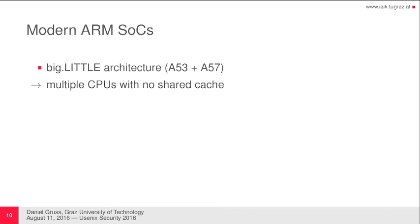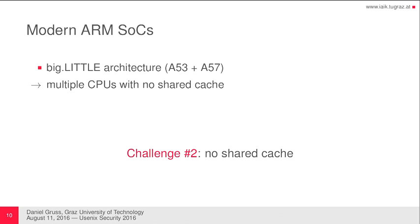We found another problem. On modern smartphones you will have multiple CPUs — for instance, with a big.LITTLE architecture, you will have a weaker A53 and a stronger A57. Depending on what you do, you will be scheduled to one of those CPUs, and one of them might even be turned off. An app shouldn't be able to force CPU placement. So we want to perform an attack without any shared cache across CPUs, and we will later find out how we solved that challenge too.